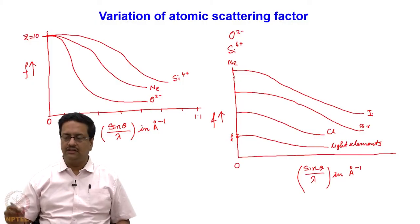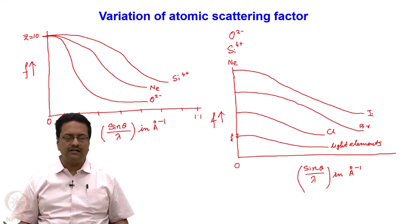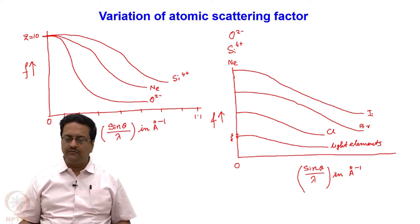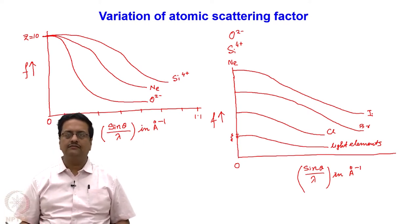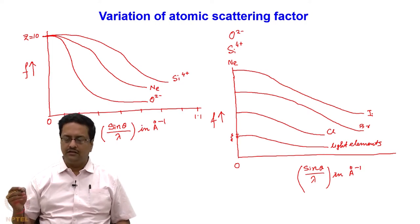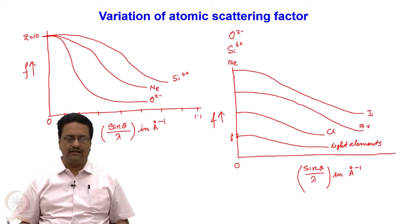Welcome back to the course of crystallography. In the previous lecture, we were talking about the atomic scattering factor f, which we defined as the ratio of the amplitude of scattered radiation by an atom divided by the amplitude of scattered x-ray by a single electron. We then understood the variation of atomic scattering factor with sinθ/λ for different nuclei, and indicated that the scattering power of an element reduces drastically with the increase in the scattering angle theta.